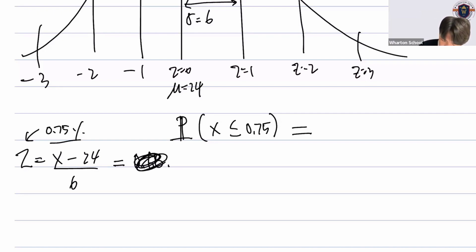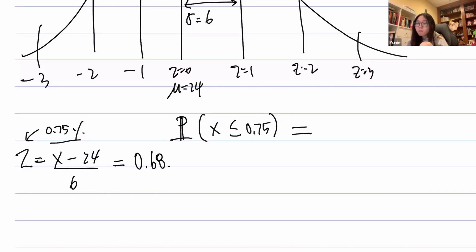Don't say that z-score is 0.75. We have to find the z-score for that. So this is 0.68, you said? Right? So you have to solve for x.